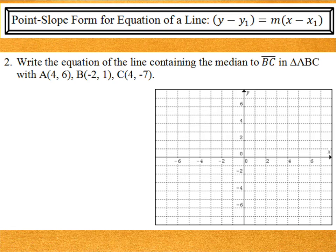In problem number 2, we're writing the equation of the line containing the median to BC in triangle ABC. So, once again, let's draw the triangle. So, I'm going to connect 4, 6 to negative 2, 1. And from there to 4, negative 7, way down there. And back up to where I started. So, here's A. Here's B. Here's C.